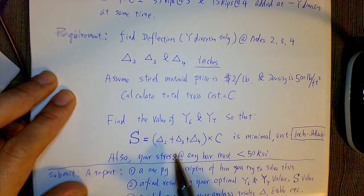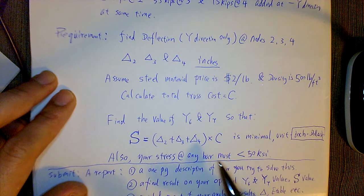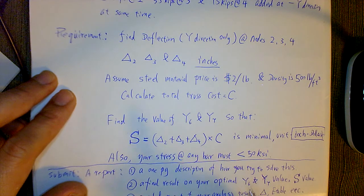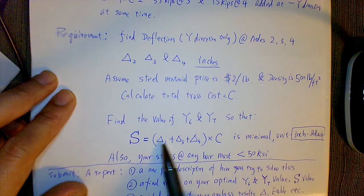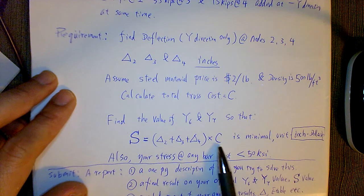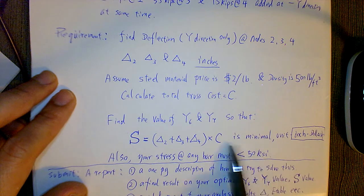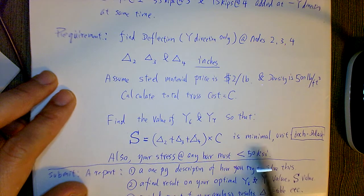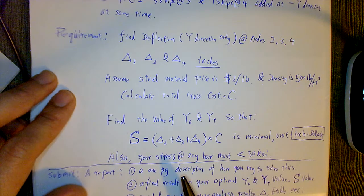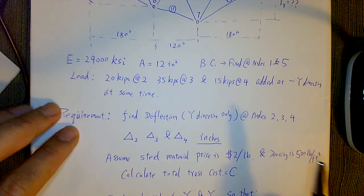So everybody is on the same page: do those deltas in inches, do this one in dollars. Then this value, this S value, you want to find the smallest possible.